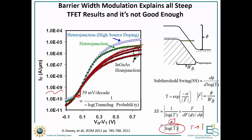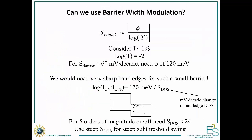You could ask: surely, at high tunneling probabilities we have a problem, but we can just make the barrier height very small and still win. But even that doesn't cut it. Consider a typical tunneling probability of around 1%, so log of the tunneling probability is minus 2. To break even — to be as good as a thermally activated switch at 60 mV/decade — we'd need this to be 120 mV/decade, meaning we need a barrier height of 120 meV. You might say you can get that with a heterojunction, no problem.